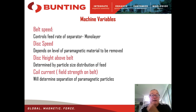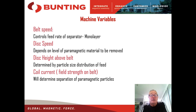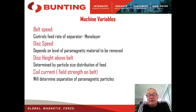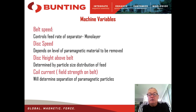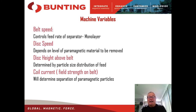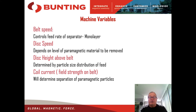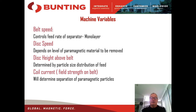Machine variables include: belt speed, which controls the feed rate of the separator — important for industrial applications, but you must maintain the monolayer of material. Disk speed is also controlled — if you have a high degree of paramagnetic material to remove, you need to run at a higher disk speed to allow material to be removed out of the field and to allow a fresh monolayer to attach to the disk grooves. If you have a high percentage of mineral to remove, running at higher disk speed ensures you always have a clear surface for particles to attach to.